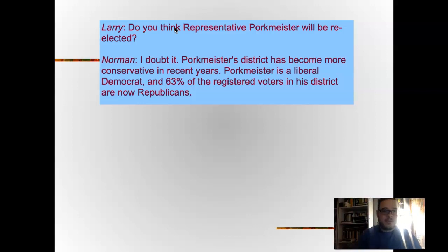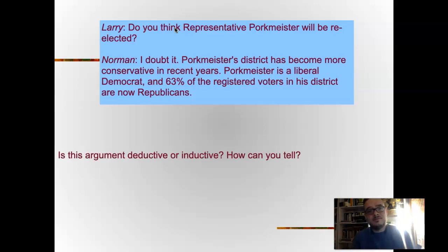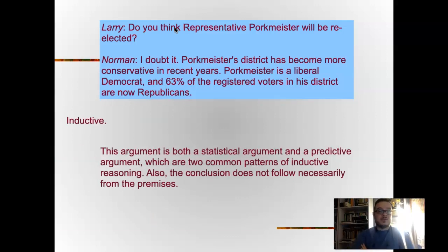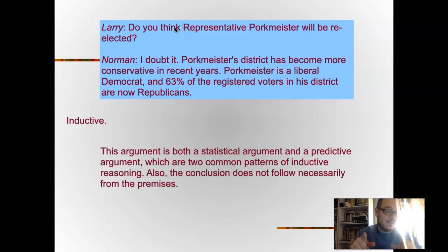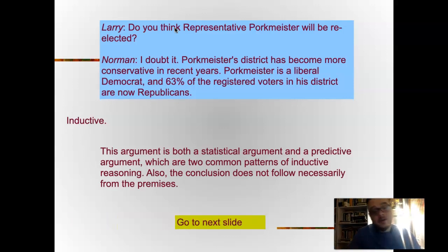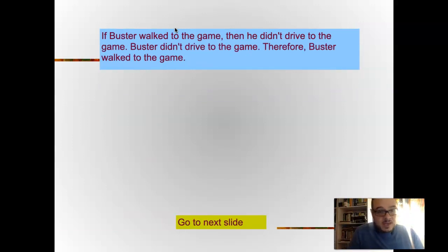'Do you think Representative Pointmeister will be re-elected?' 'I doubt it. Pointmeister's district has become more conservative in recent years. Pointmeister is a liberal Democrat, and 63% of registered voters in his district are now Republicans.' This argument is inductive. It is both a statistical argument and a predictive argument — two common patterns of inductive reasoning. Note that statistical arguments involve numbers, but because the conclusion is probabilistic rather than certain, they are still inductive. The conclusion does not necessarily follow; Pointmeister may be popular with Republicans in his district for other reasons.